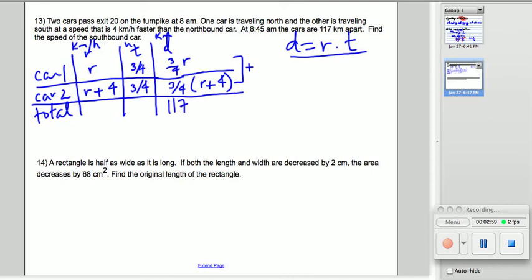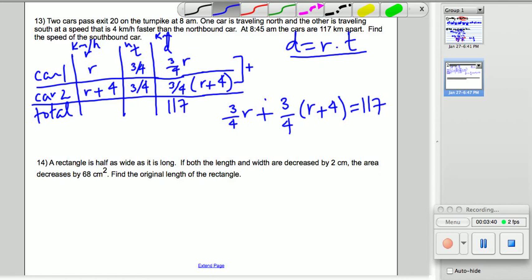So, let's write that up, because that's going to be our equation. 3 fourths times r plus 3 fourths times r plus four equals 117. Now, we're going to solve this equation, and that will give us r. What we're going to do to get rid of these ugly fractions, we're going to multiply everything by four.